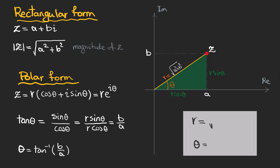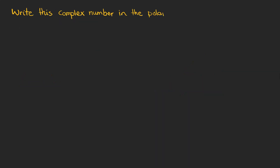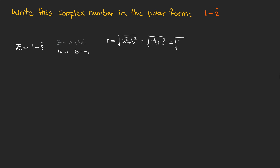These are the two relations that connect the rectangular form to the polar form. So let's write this complex number in the polar form. We have 1 minus i as our complex number. The real part is 1 and the imaginary part is minus 1. To find r we use the square root of a squared plus b squared. Since a is 1 and b is minus 1, r is equal to the square root of 2.